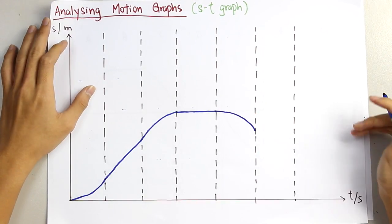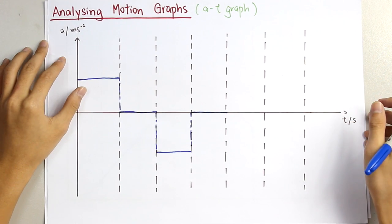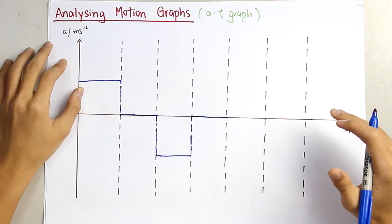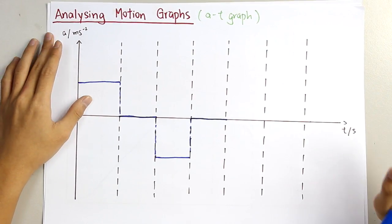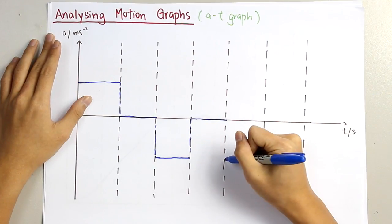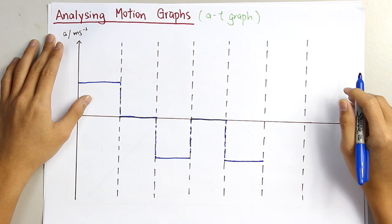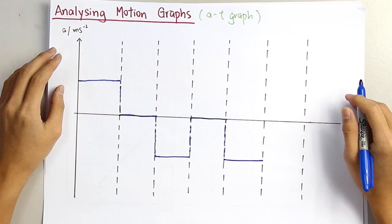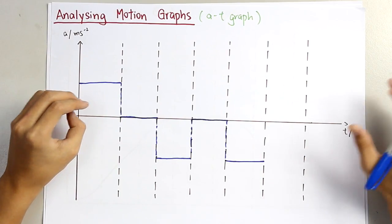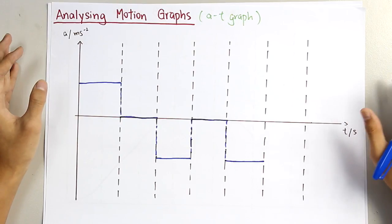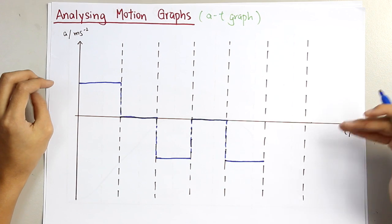Increasing gradient. And for the AT graph, since it is a negative gradient, it shows that it is negative acceleration. However, this doesn't mean that the object is moving in deceleration motion — it is moving in acceleration, but in the opposite direction.